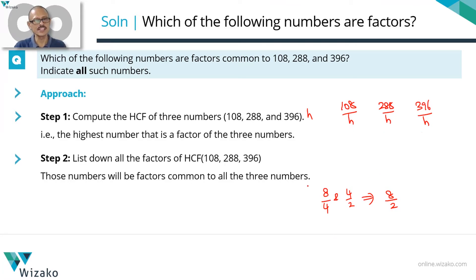The HCF of these three numbers is H. So H divides all these three numbers. Let's say this HCF has got exactly two factors just for sake of understanding. Let's say those factors are F1 and F2. So F1 will divide H, F2 will also divide H. 108 is divisible by the HCF, the HCF in turn is divisible by F1, which means that 108 will be divisible by F1. 108 will be divisible by F2. So will 288 be, so will 396 be. So if we find the HCF and list down all the factors of the HCF, we have found out all numbers that are common factors of these three numbers.